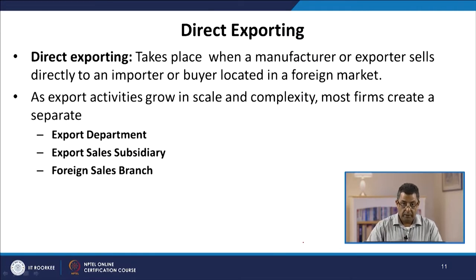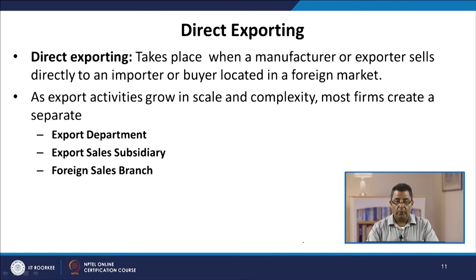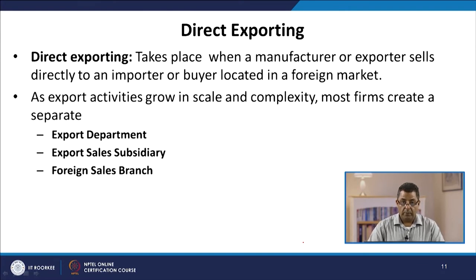From indirect exporting, the next step is direct exporting, which takes place when a manufacturer or exporter sells directly to an importer or buyer located in a foreign market. In indirect exporting, the company sold to an independent organization that handled everything else. In direct exporting, the things become riskier. As export activities grow in scale and complexity, most firms create a separate export department, export sales subsidiary, or foreign sales branch.